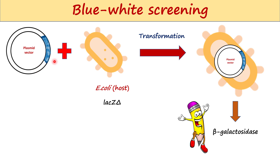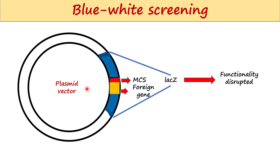When the plasmid vector is taken up by these bacteria, a functional beta-galactosidase enzyme is produced due to the complementation process. The E. coli bacteria does not have the functional beta-galactosidase gene, but the plasmid vector carries the functional beta-galactosidase gene, so this functional gene complements the non-functional gene of E. coli, and we get functional beta-galactosidase protein.